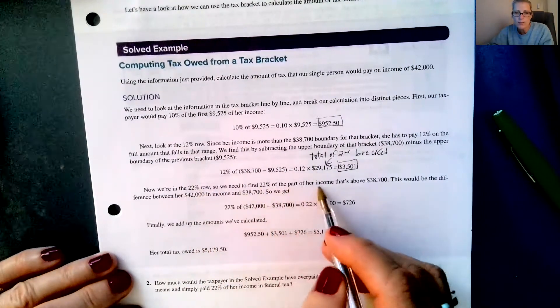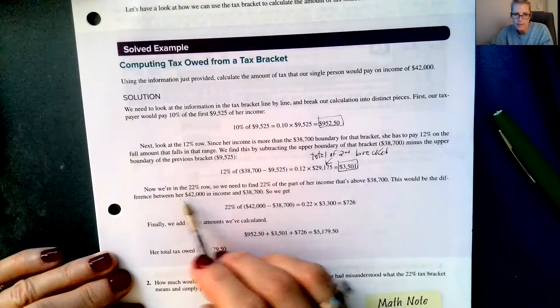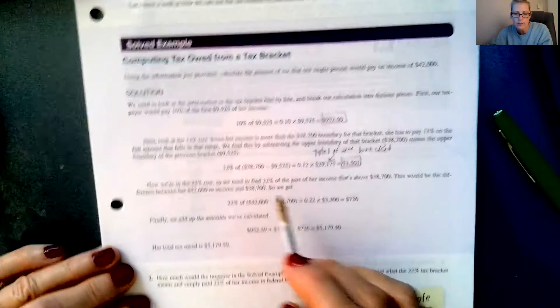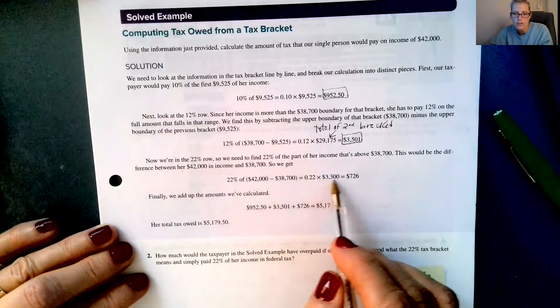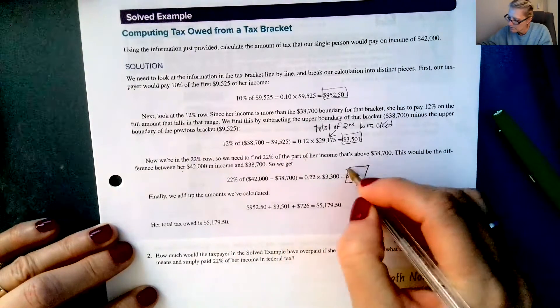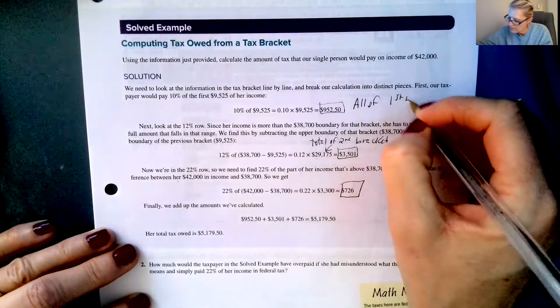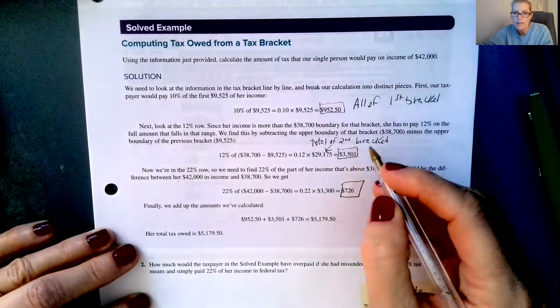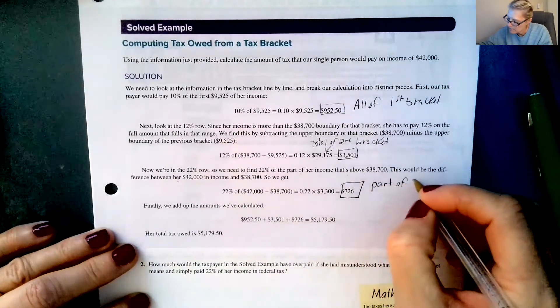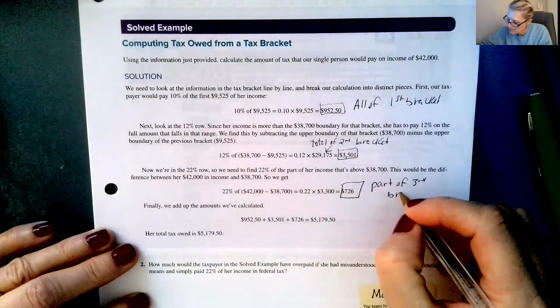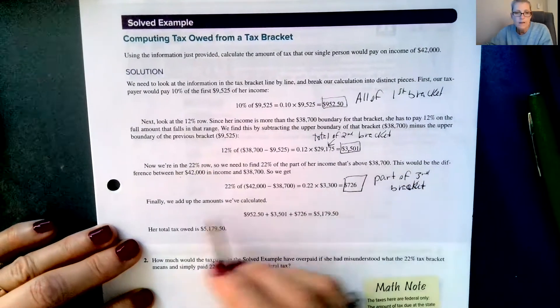So now we're in the 22% row. So we need to find 22% of the part of her income that's above $38,700. This would be the difference between her $42,000 in income and the $38,700. So 22% of that difference is 0.22 times $3,300, which is $726. So all of first bracket, and then all of the second bracket, and then this is how much of the third, so part of the third bracket.